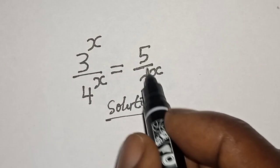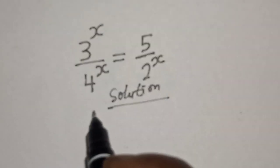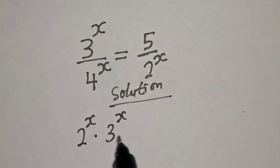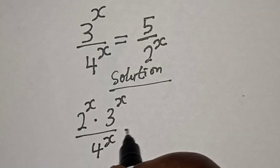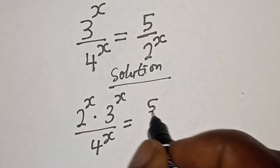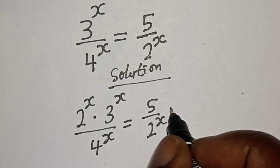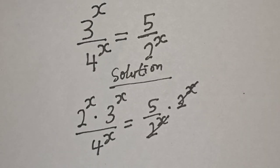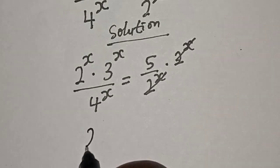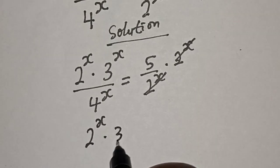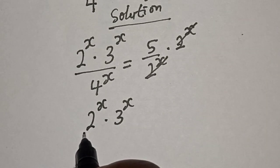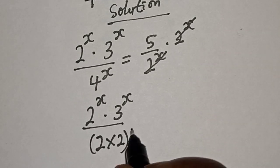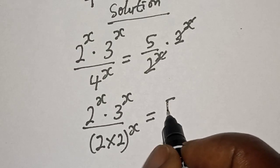Then, let's multiply both sides of the equation by 2 to the power of x. That is, 2 raised to power x multiplied by 3 raised to power x over 4 raised to power x is equal to 5 over 2 raised to power x multiplied by 2 raised to power x. This will cancel 2 raised to power x. We have 2 to the power of x multiplied by 3 to the power of x divided by 4, which can be written as 2 times 2 to the power of x, is equal to 5.